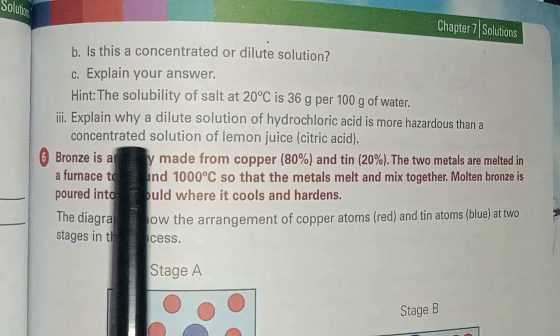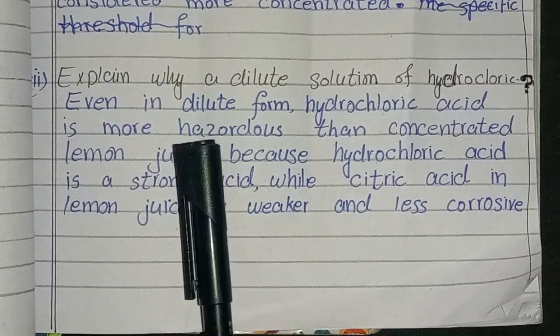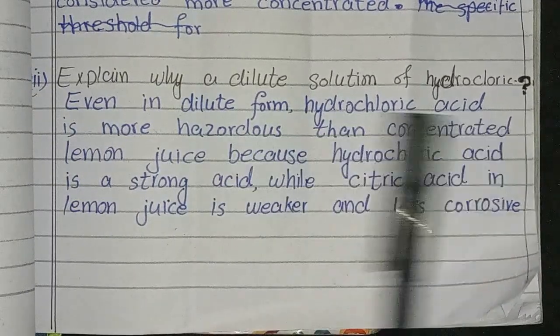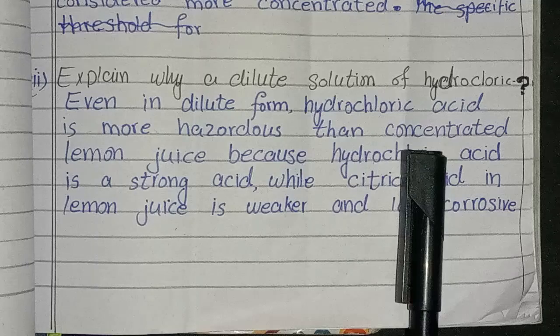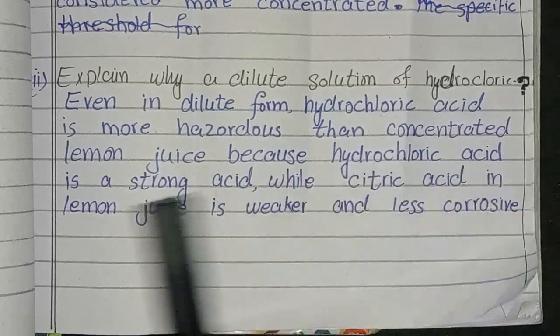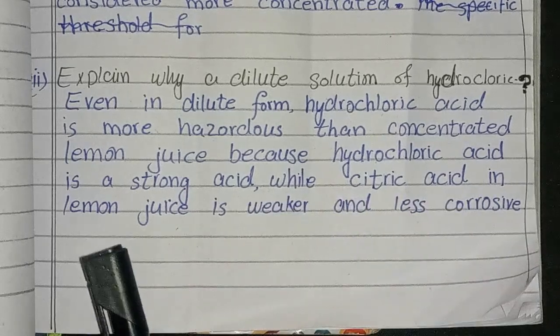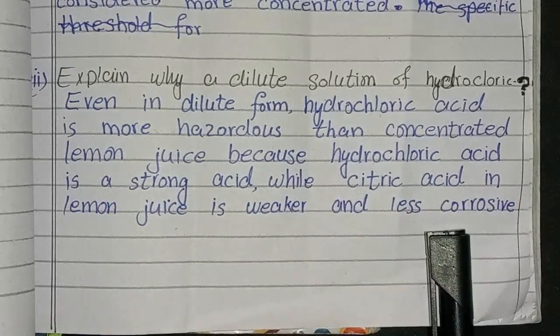Next question: explain why a dilute solution of hydrochloric acid is more hazardous than concentrated lemon juice. Even in dilute form, hydrochloric acid is more hazardous than concentrated lemon juice because hydrochloric acid is a strong acid while citric acid in lemon juice is weaker and less corrosive.